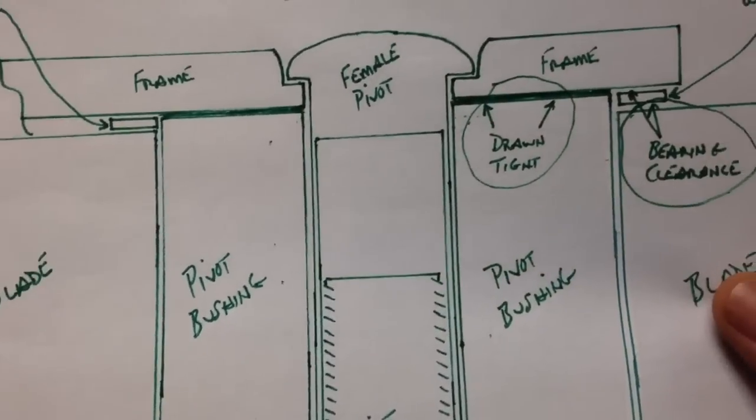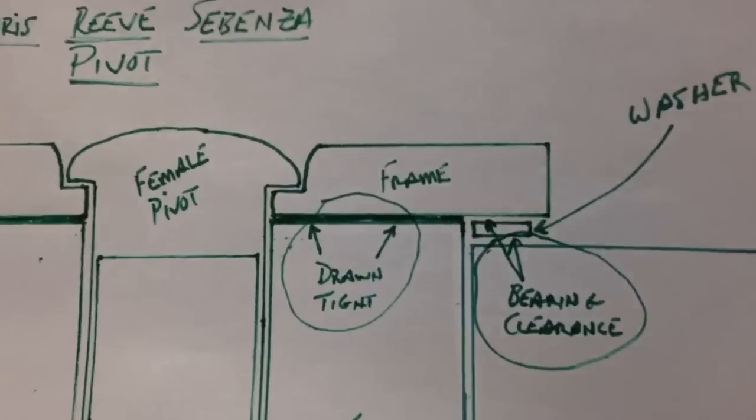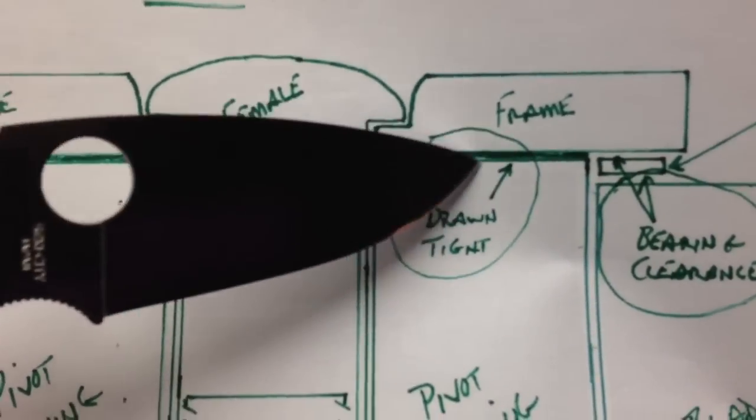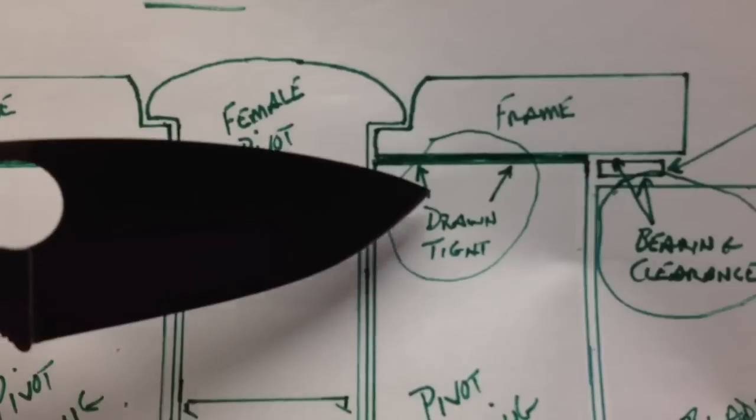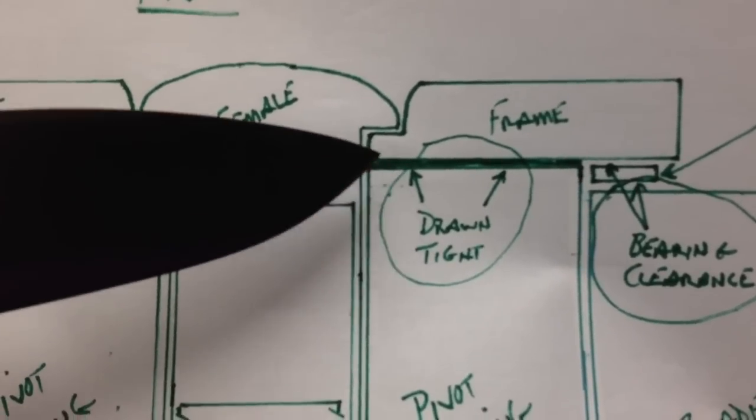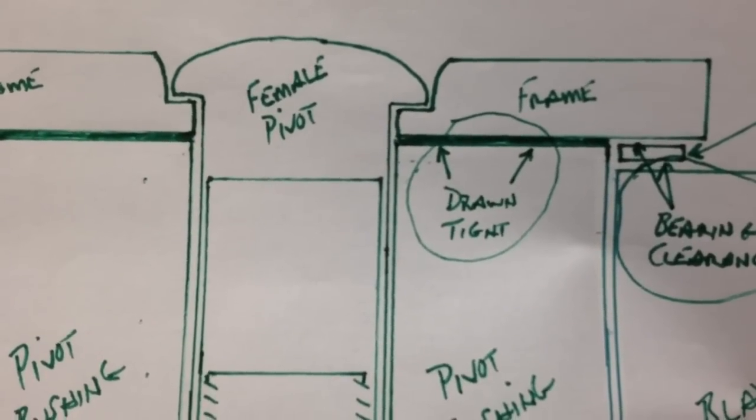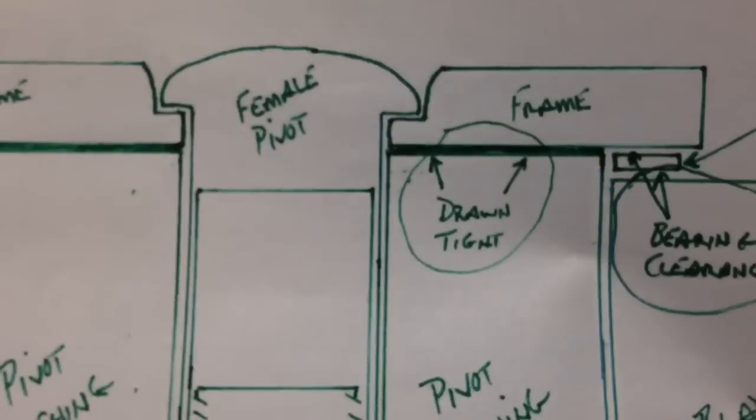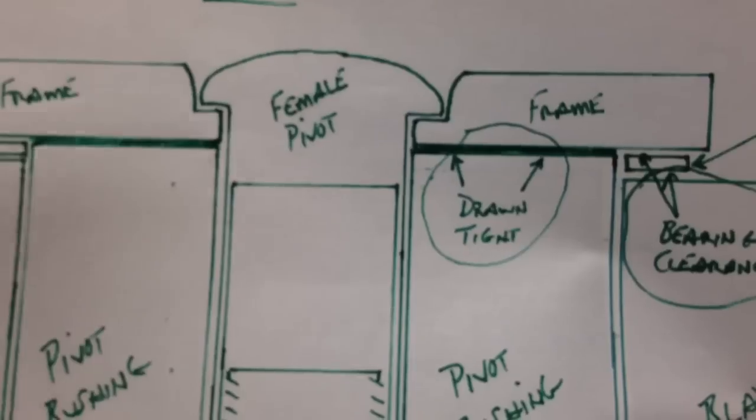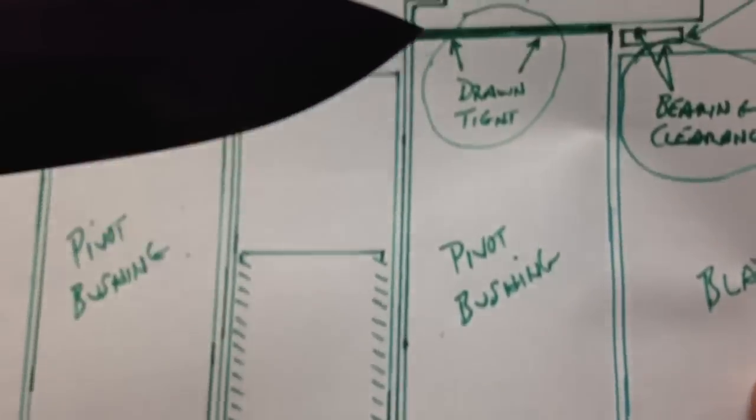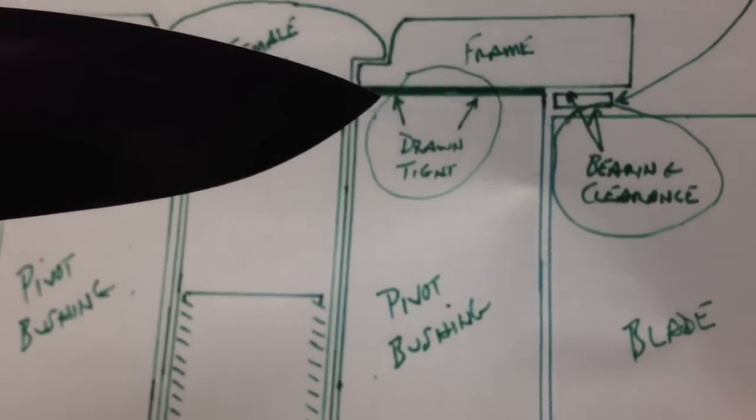The height of the bushing, the dimension from here to here, is precisely fitted to the width of the blade and the thickness of these two washers. So what you have, and if you look over to this area of the diagram you can see that this joint between bushing and frame is drawn completely tight. So when you tighten that pivot screw there's nowhere to go. That is a precise dimension that can't be adjusted.